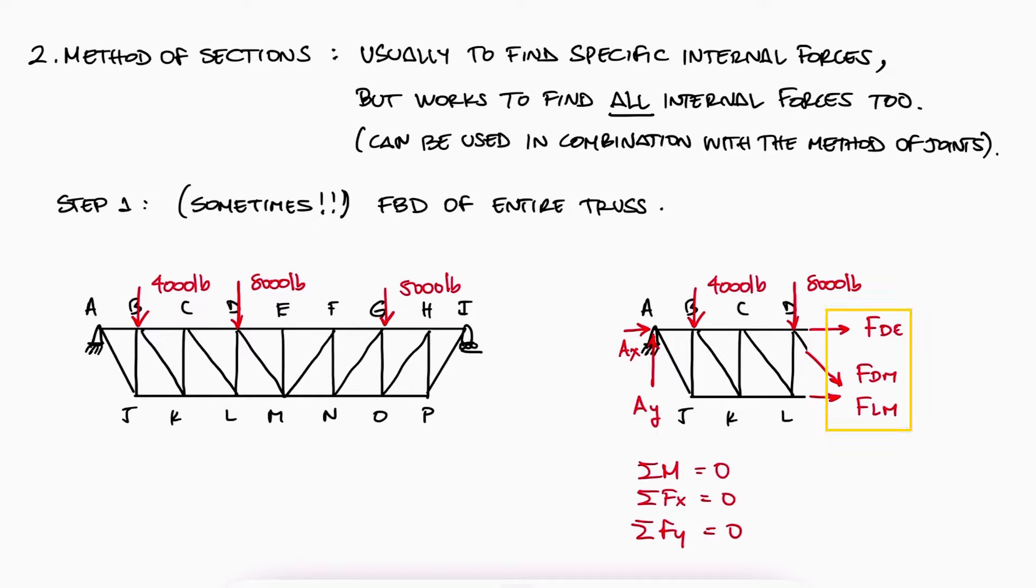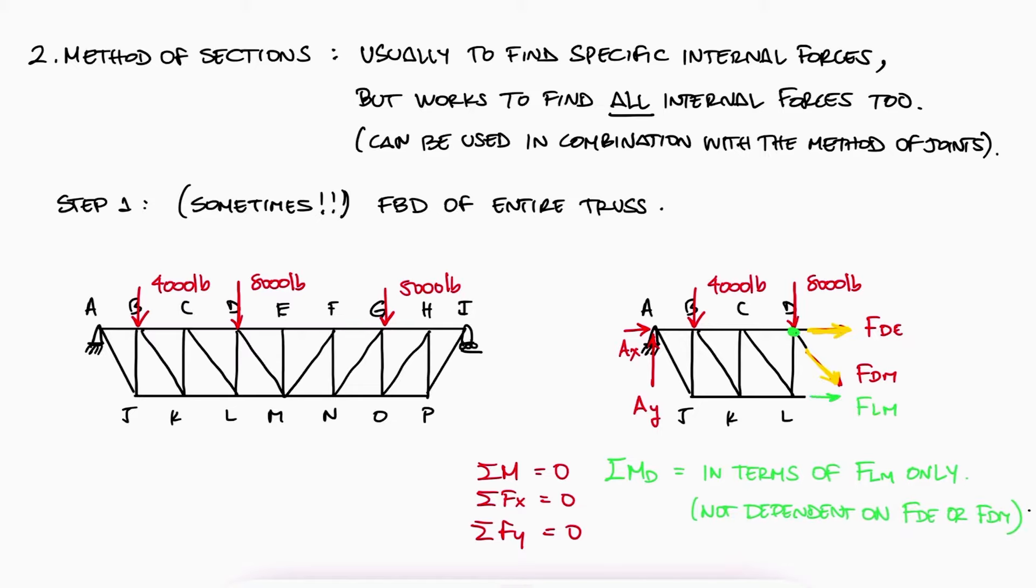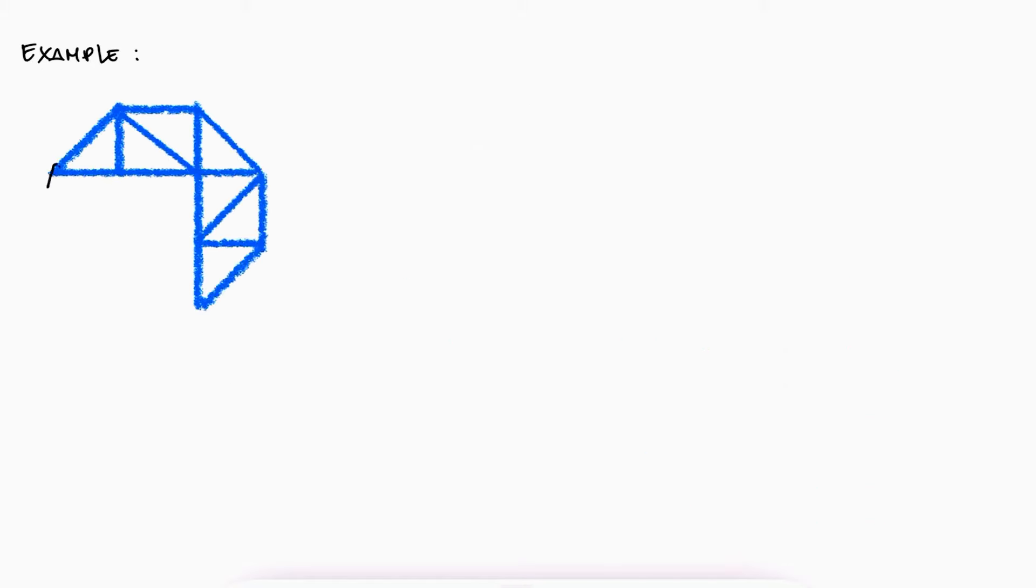Three is usually a good number, and the way to proceed after making the cut is to write a sum of moments about a point, in this case a joint, where two of the unknown internal forces are pointing towards. That way, only one unknown will be present in that equation, and you can therefore easily solve for it.